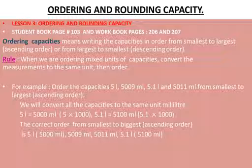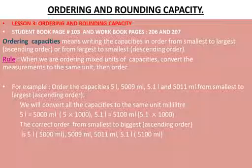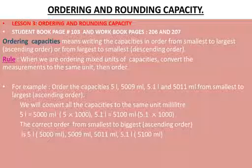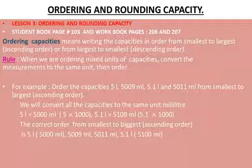We already learned ordering mass and ordering length — similarly we have to do ordering capacities the same way, but the unit will change to liter and milliliter. Ordering capacities means writing the capacities in order from smallest to largest (ascending order) or from largest to smallest (descending order). The rule is: when ordering mixed units of capacities, convert the measurements to the same unit, then order.